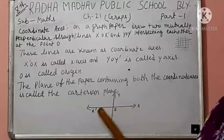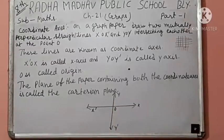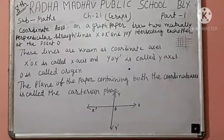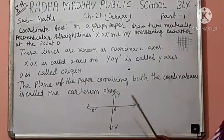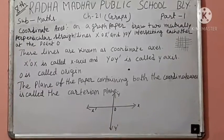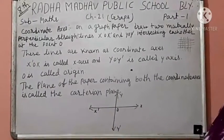X O X dash is called X axis, and Y O Y dash is called Y axis. And O is the origin, the origin of the axes.